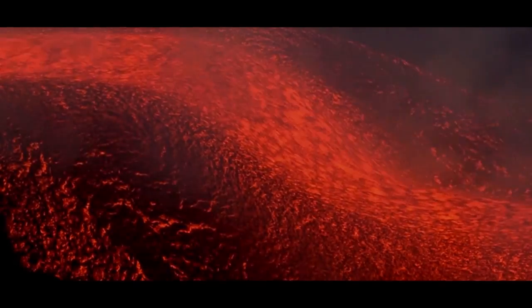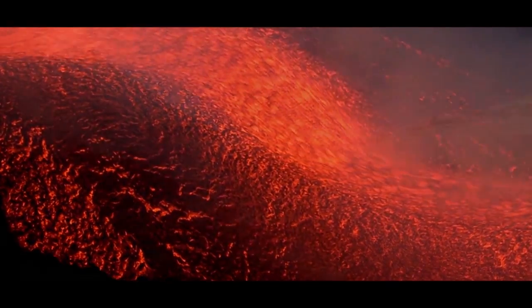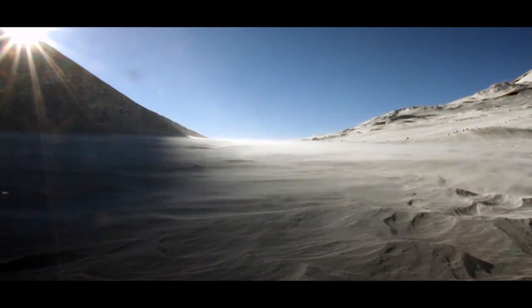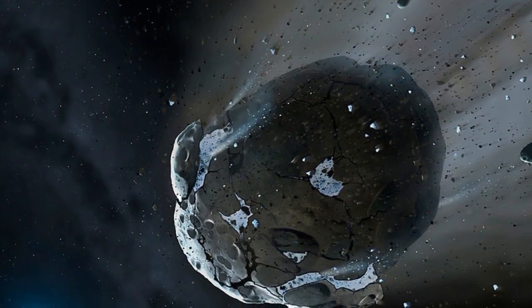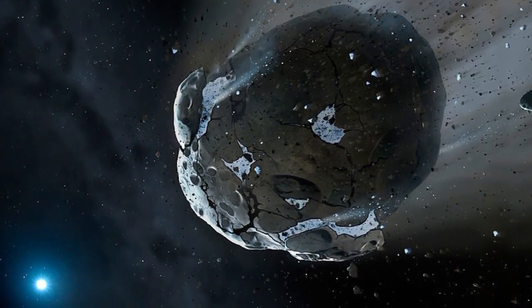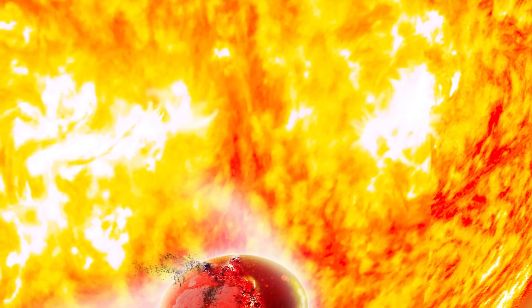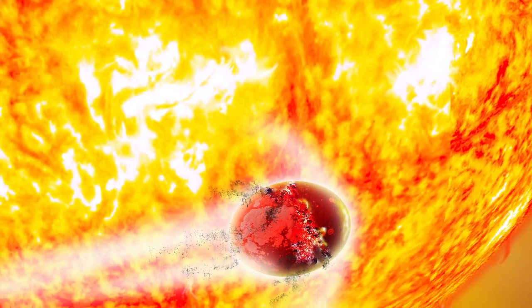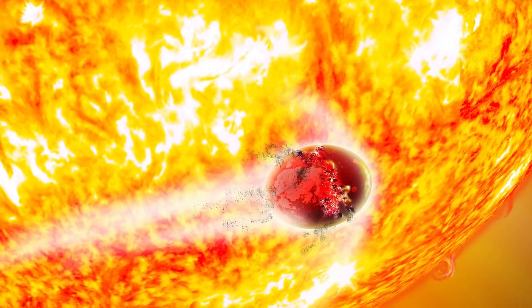We get another Permian Triassic mass extinction event that wipes out 99% of life on Earth, you continue to exist. We get an asteroid 100 kilometers in diameter that strikes the Earth and wipes out all life, you continue to exist. 7.6 billion years later, when the Sun is going to swallow the Earth and actually swallows it, you will continue to exist.